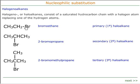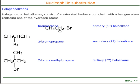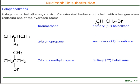When the halogen atom is attached to a carbon which is only attached to one alkyl group, then it's a primary haloalkane. In other words, the carbon that holds the halogen has one alkyl group attached. So bromoethane is a primary halogeno alkane.